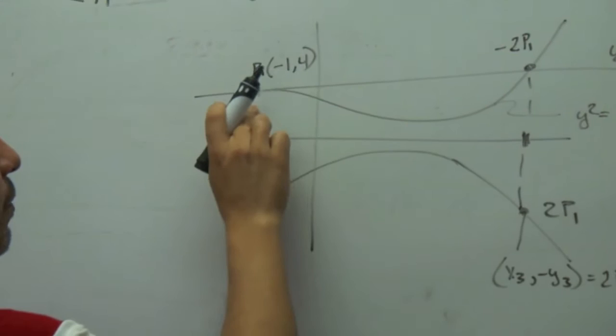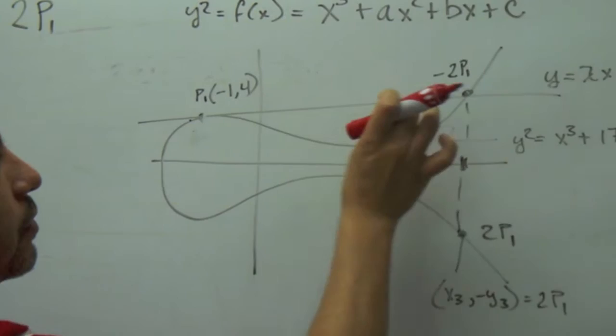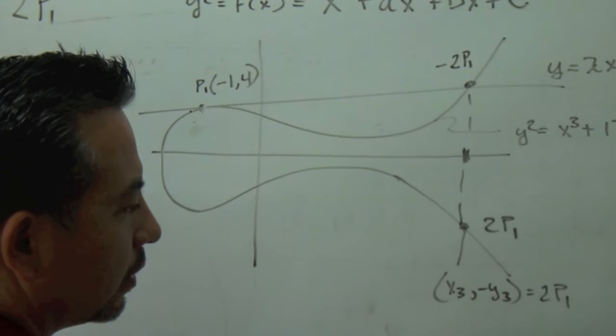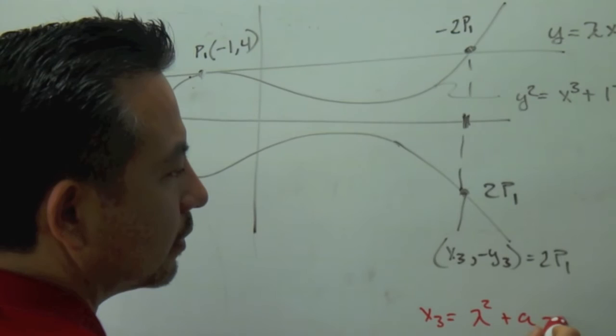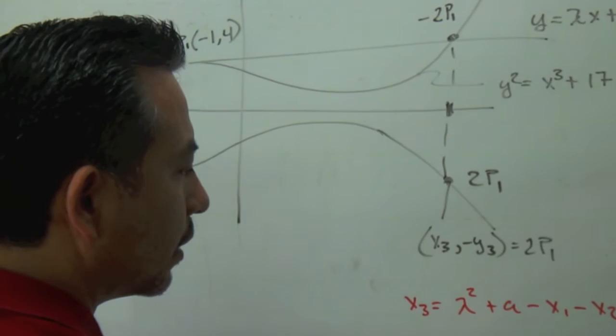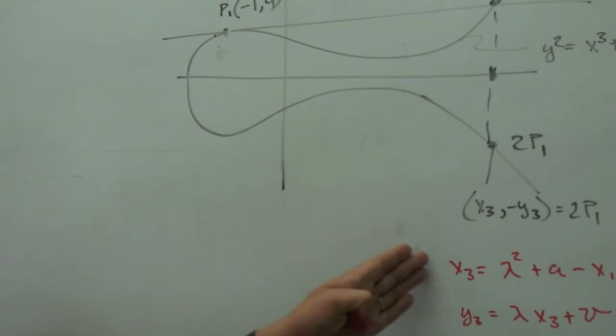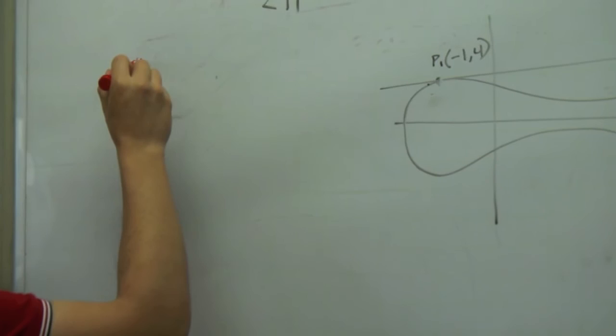So the first step I wanted to do is find this equation. I wanted to find lambda, because we proved in the past that x3 is equal to the slope to the square plus a minus x1 minus x2. For this specific case, x1 is equal to x2, and then y3 was equal to lambda x plus b. So in my coordinate here, this is what I wanted to find.